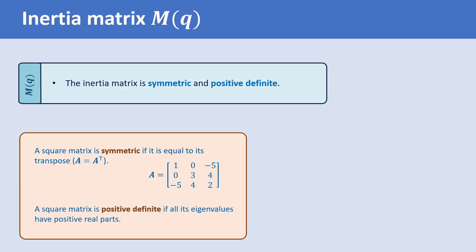A square matrix with real entries is said to be positive definite if all its eigenvalues have positive real parts. This is an interesting property for the inertia matrix, as its eigenvalues are functions of the joint coordinate vector Q. The property says that for any vector Q, the eigenvalues of the inertia matrix have positive real parts. In other words, it doesn't matter what the configuration of the robot is — the inertia matrix M is always positive definite.